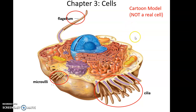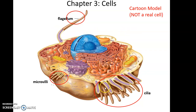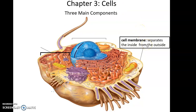This is a cartoon model and it has a few inaccuracies, including the relative size of organelles and colors — cells aren't that colorful. It also shows on one cell a flagellum, microvilli, and cilia. You will never see all three of these structures in one cell; in fact, you'll never see two of them on a single cell. A cell may have one of these or none of them.